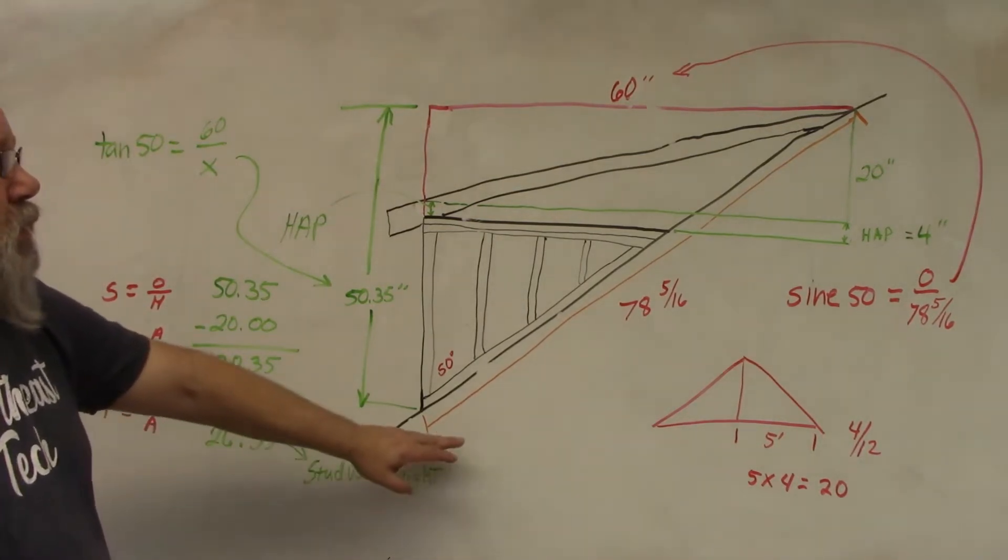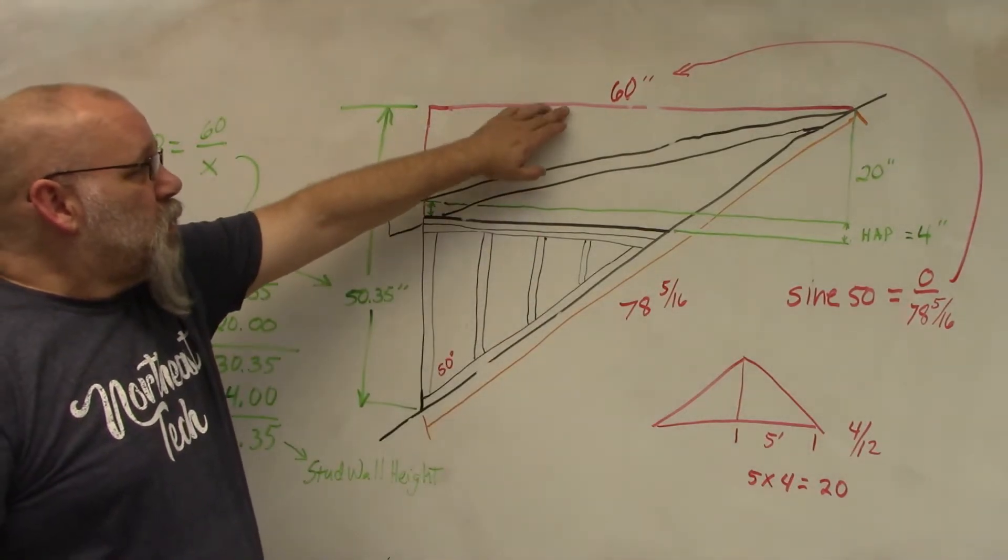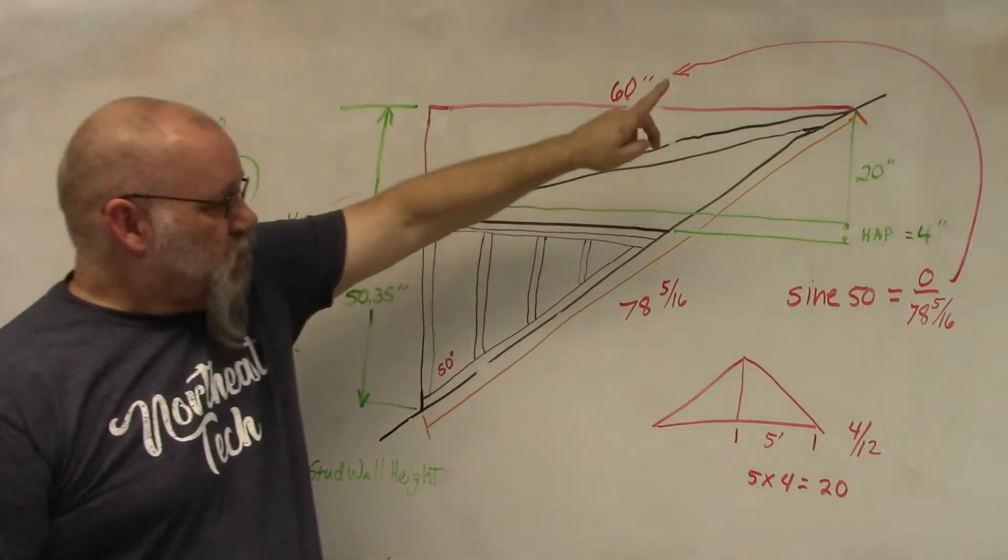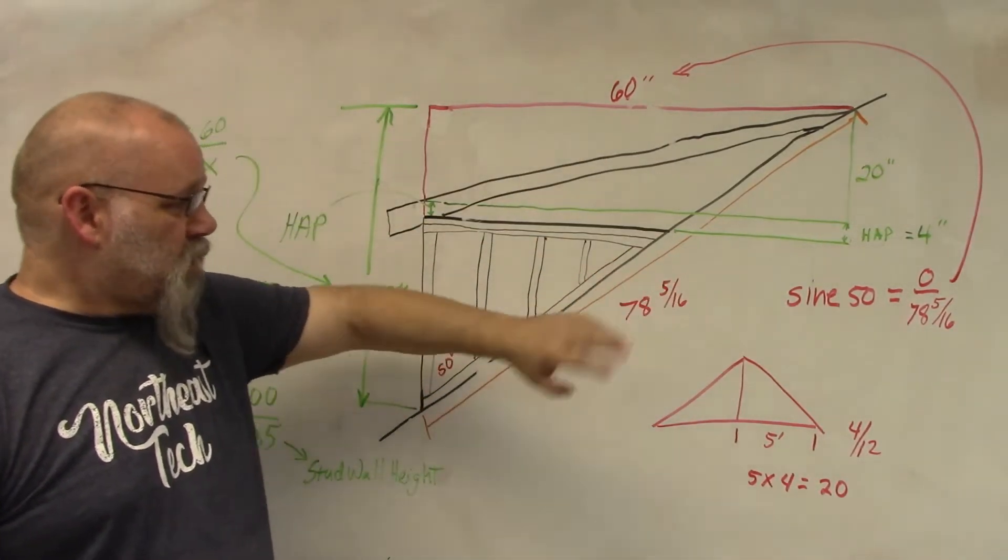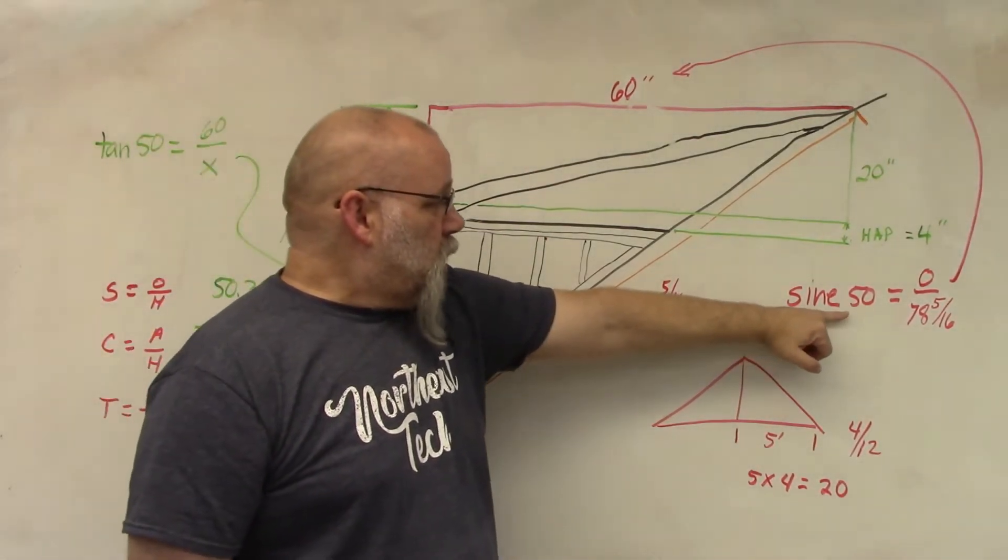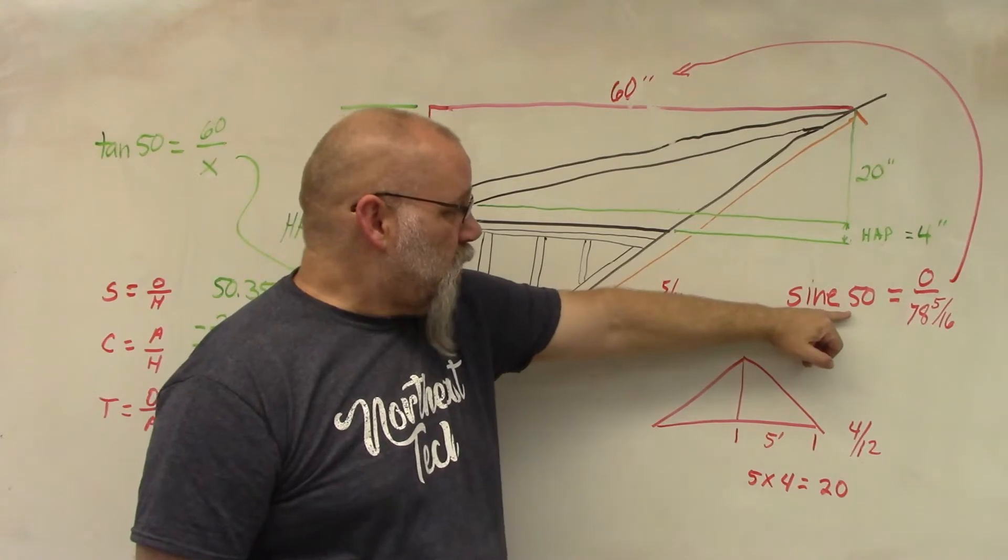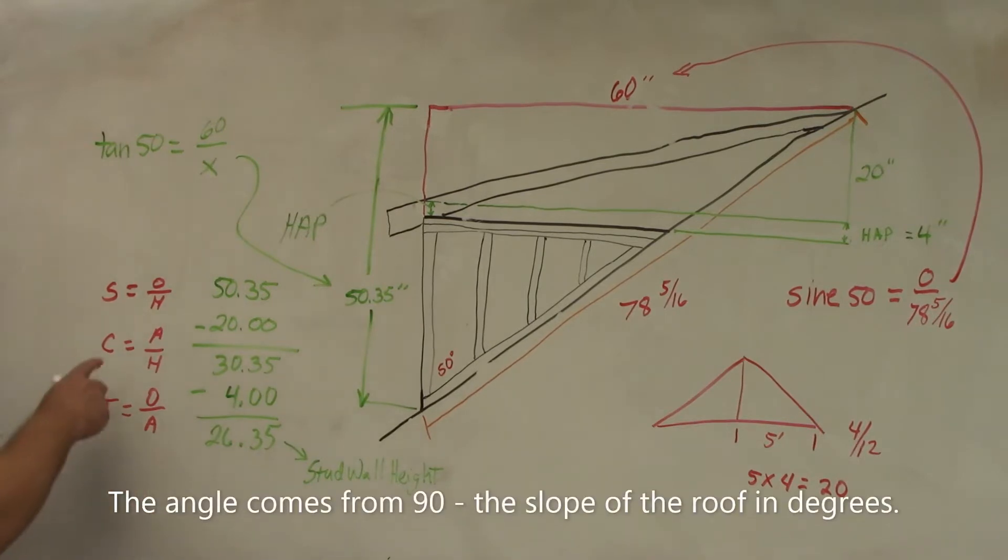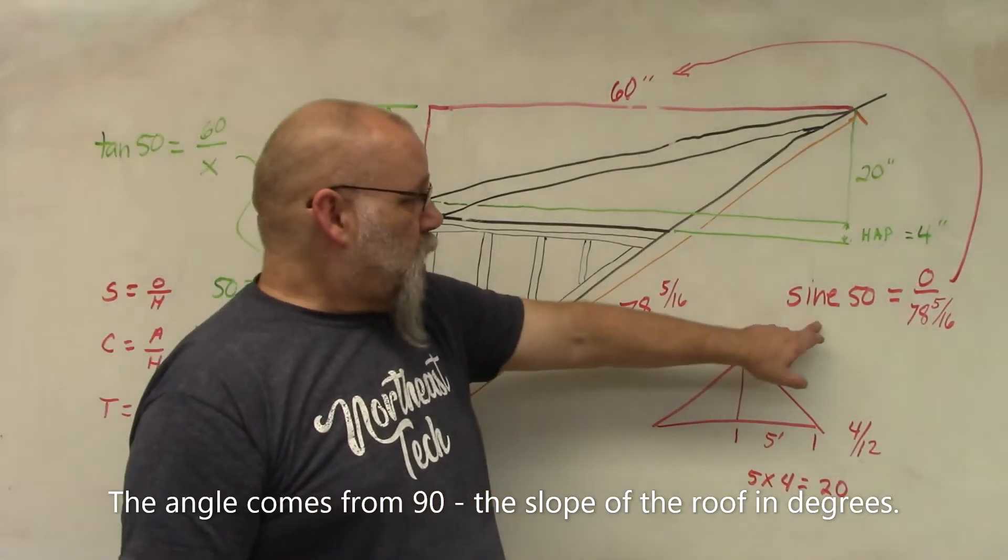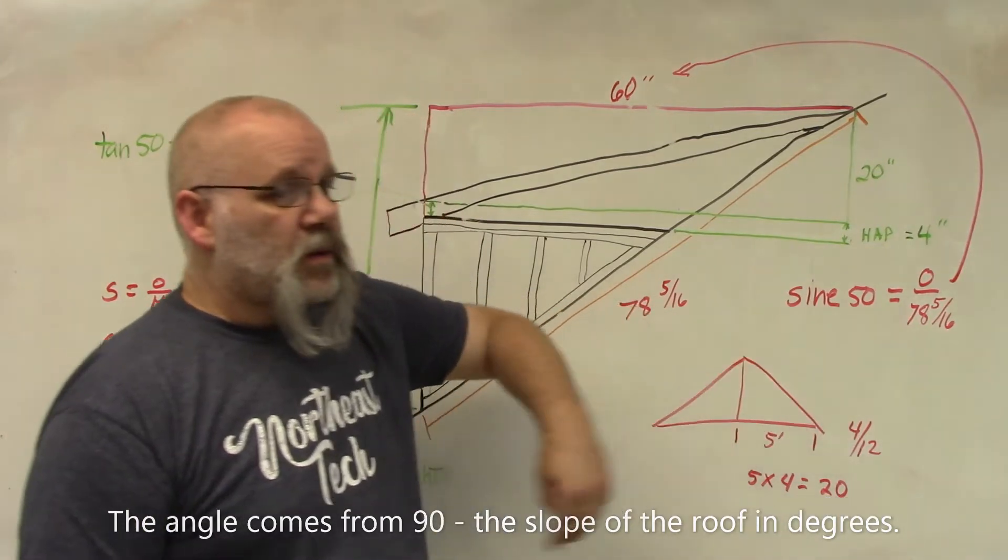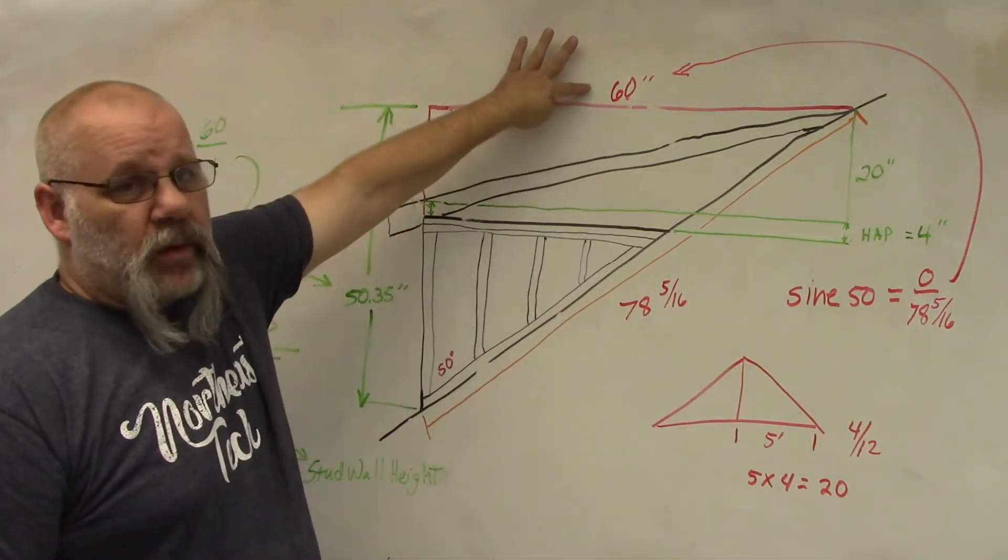The first thing we need to do is find out what this measurement is up here, the 60 inches. So after I've measured this and it came out to 78 5/16 to the ridge up there, I would use this formula: sine of 50 equals opposite over 78 5/16. So that would be this equation over here, so it would be 50 sine times 78 5/16 equals, and that will give you 60 inches.